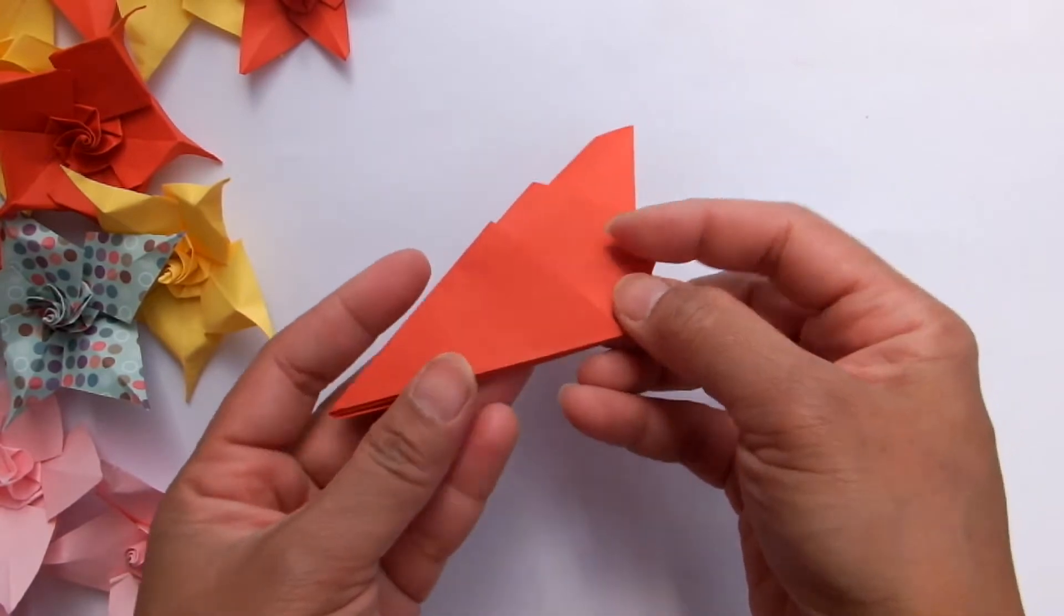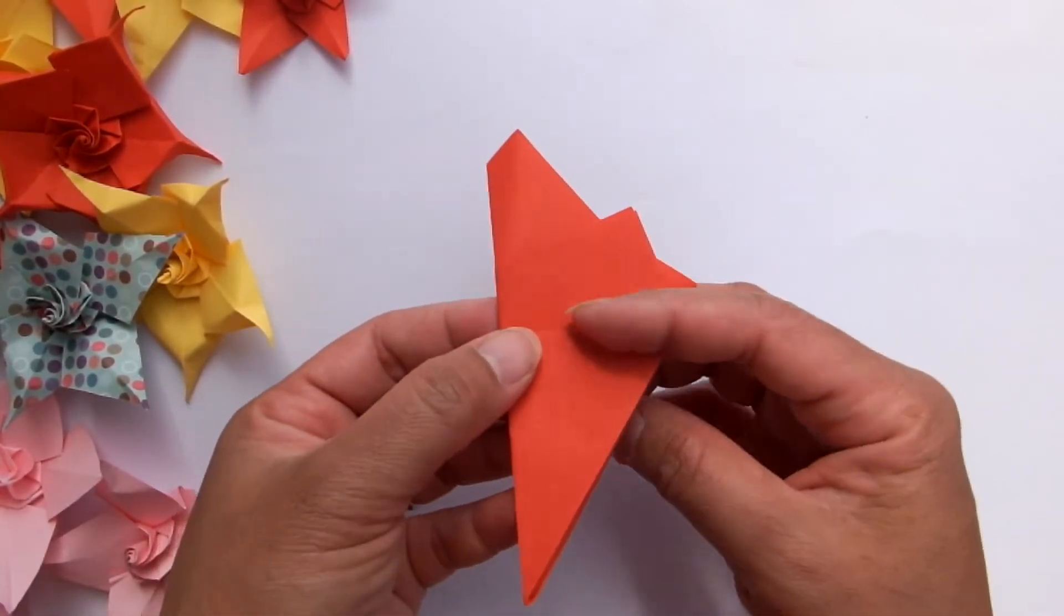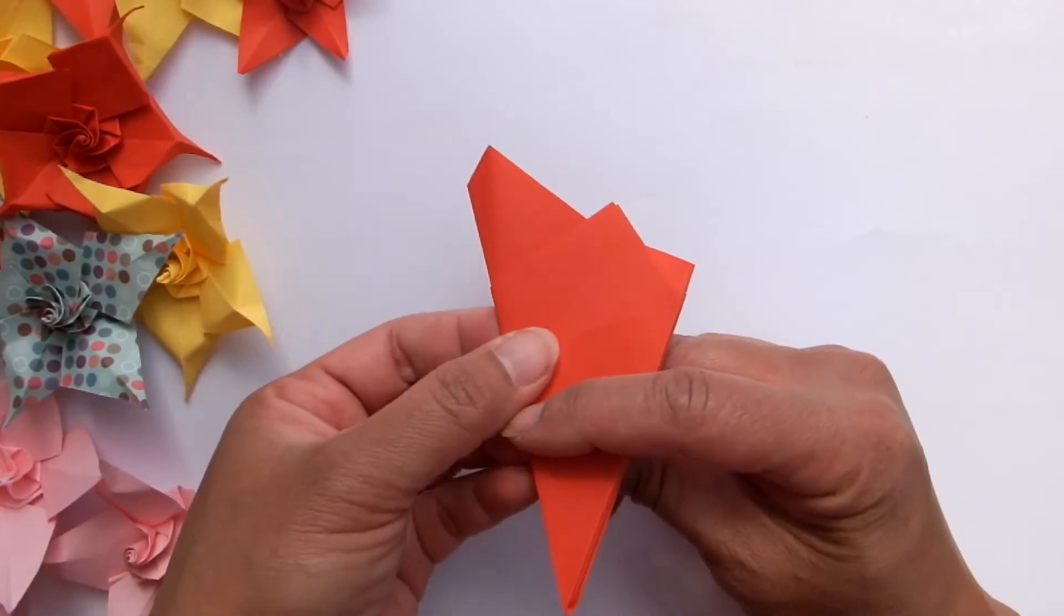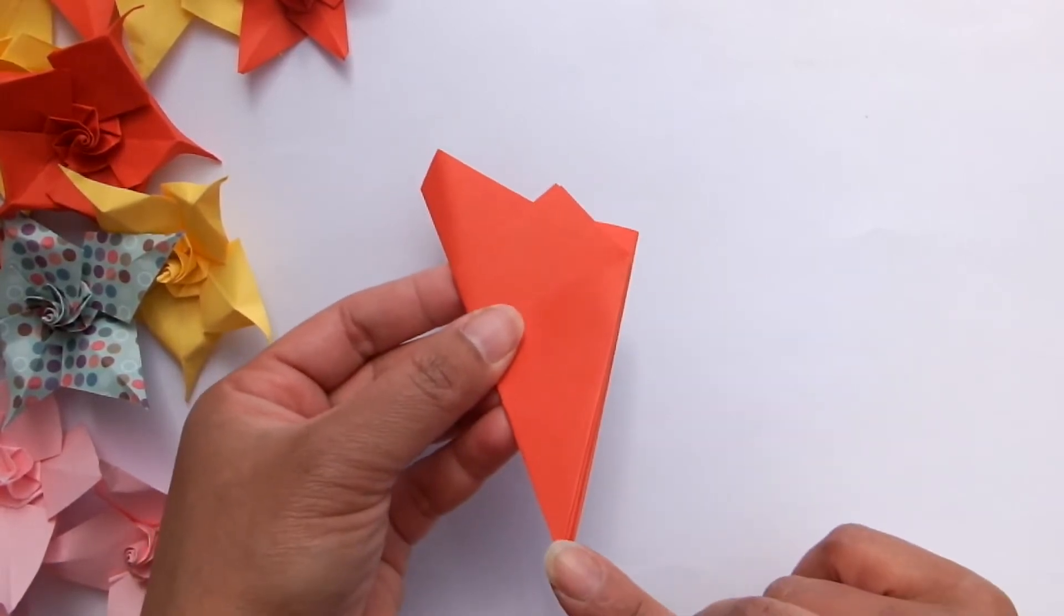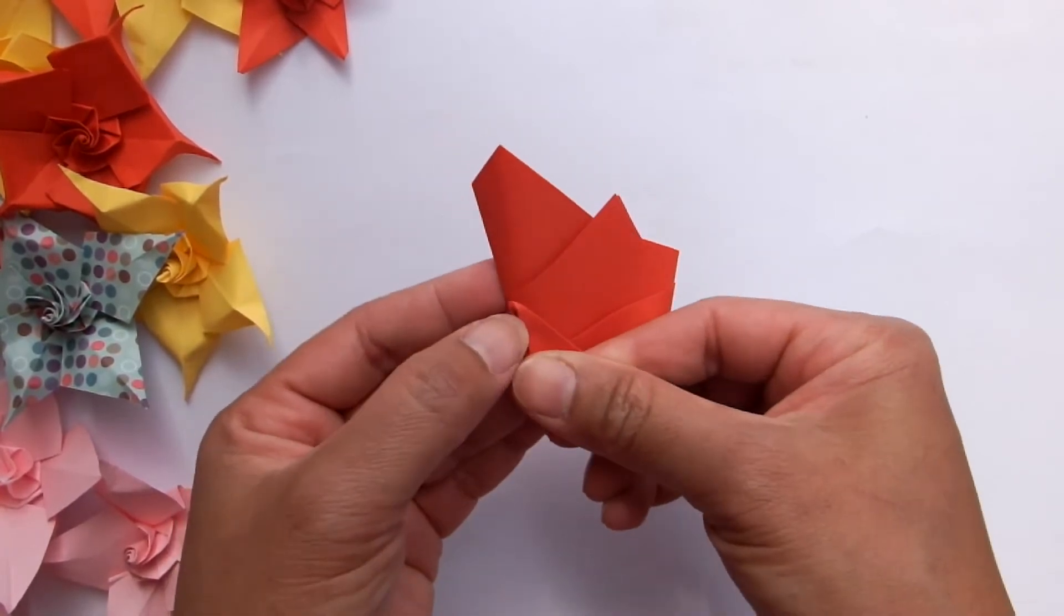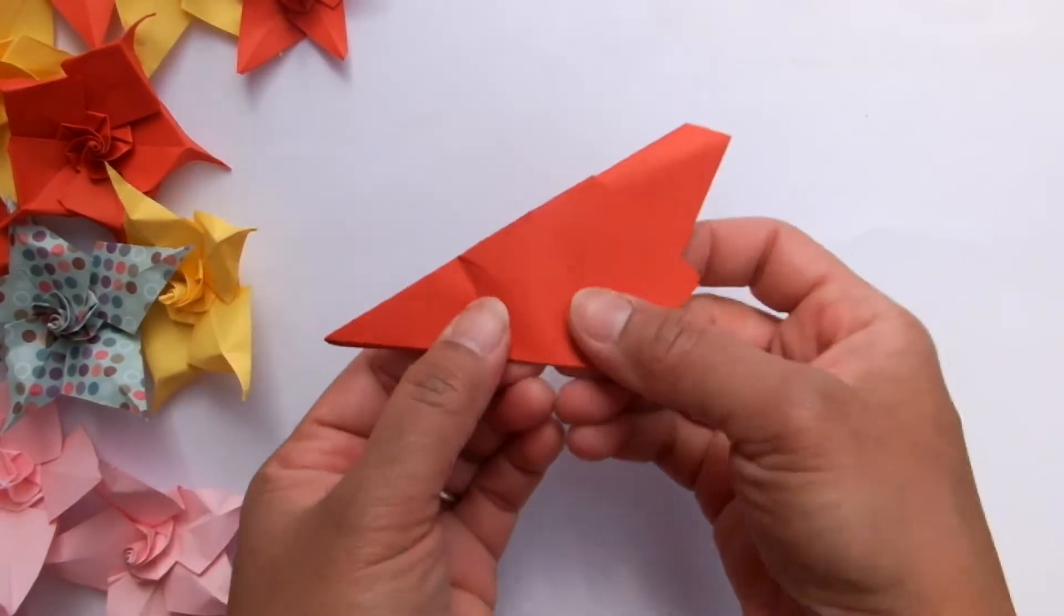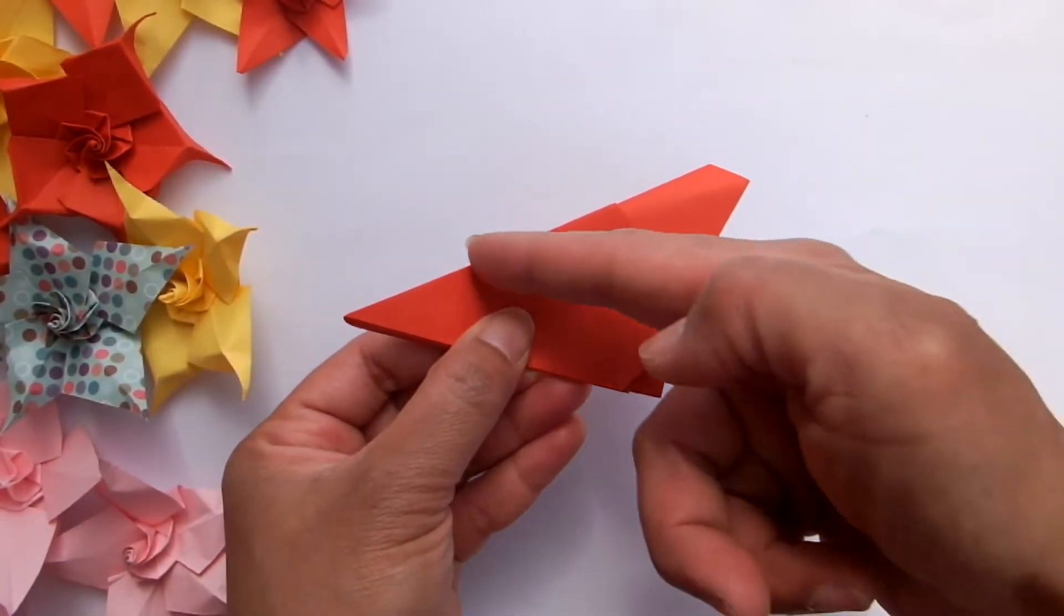Usually to make the pentagon shape we cut this line, but right now we want to make the star shape. So we bring this point to this line. Pinch here and we cut from this part to this part.